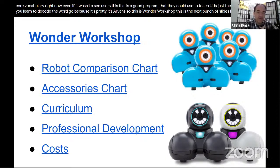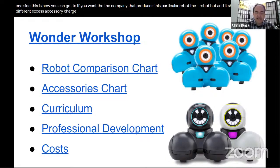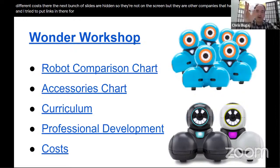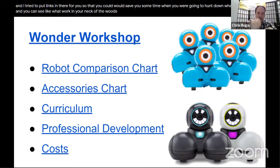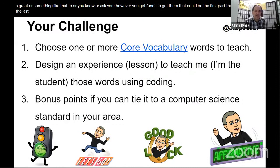The Wonder Workshop Dash robot's company provides accessory kits, curriculum, professional development courses, and pricing links. The hidden slides in the deck cover other robot companies as well, with links to save you research time. The Dash robots are around $150 each, so you might look at a grant or other funding source to get started.